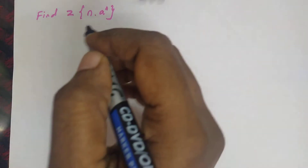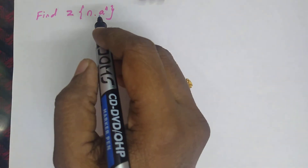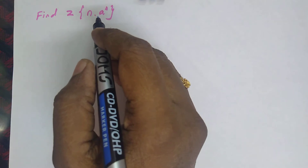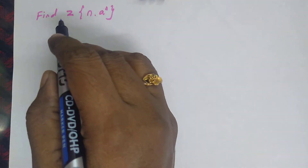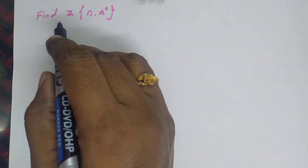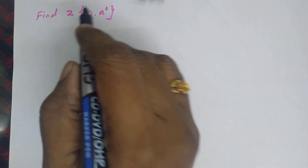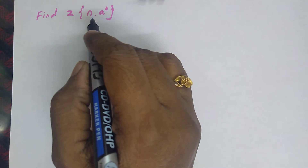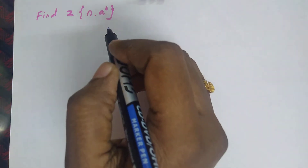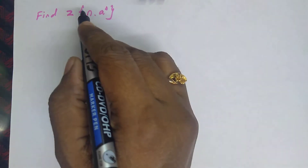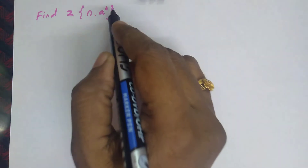Welcome to the lecture series of Z-Transform. Today we are going to see a very important problem under Z-Transform. Look at the question: find Z of sequence n into a power n. Here this bracket notation represents a sequence.